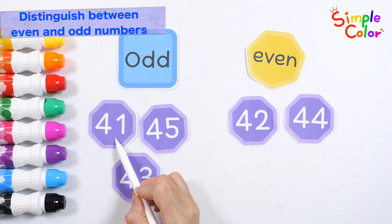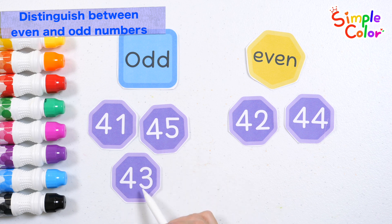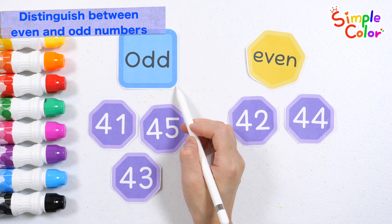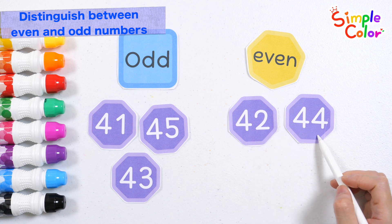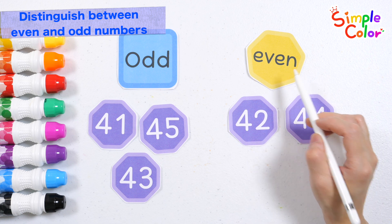41, 45, 43, it's odd. 42, 44, it's an even number.